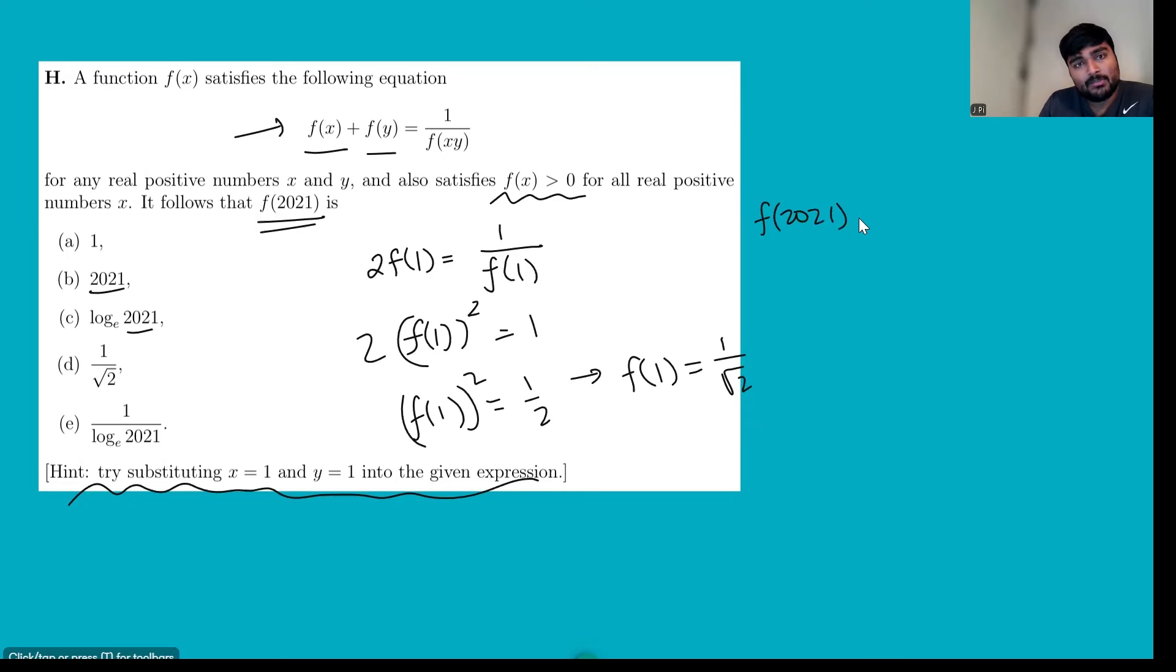So I get f(2021) plus f(1) equals 1 over f of 2021 times 1 is 2021. So we've got an equation now where we know what f(1) is, it's just 1 over root 2, and now the only other unknown is f(2021), which is the thing we're trying to work out.